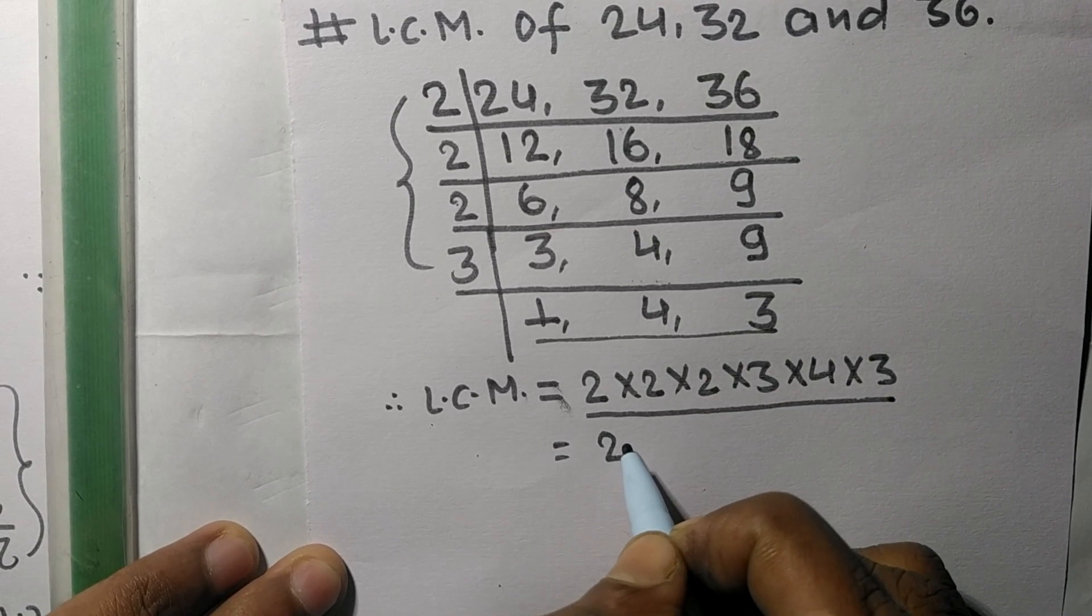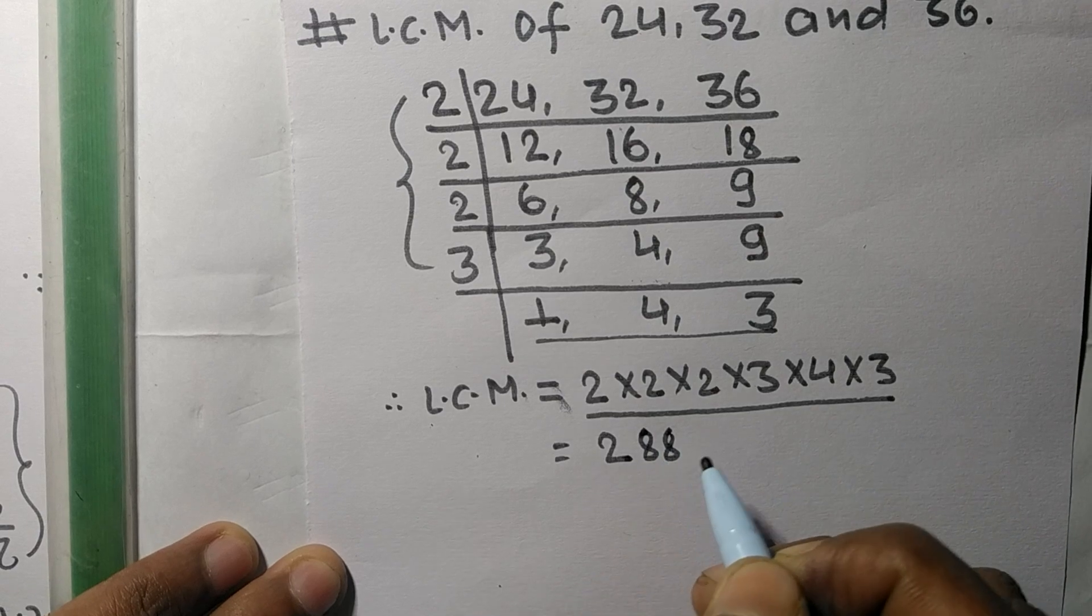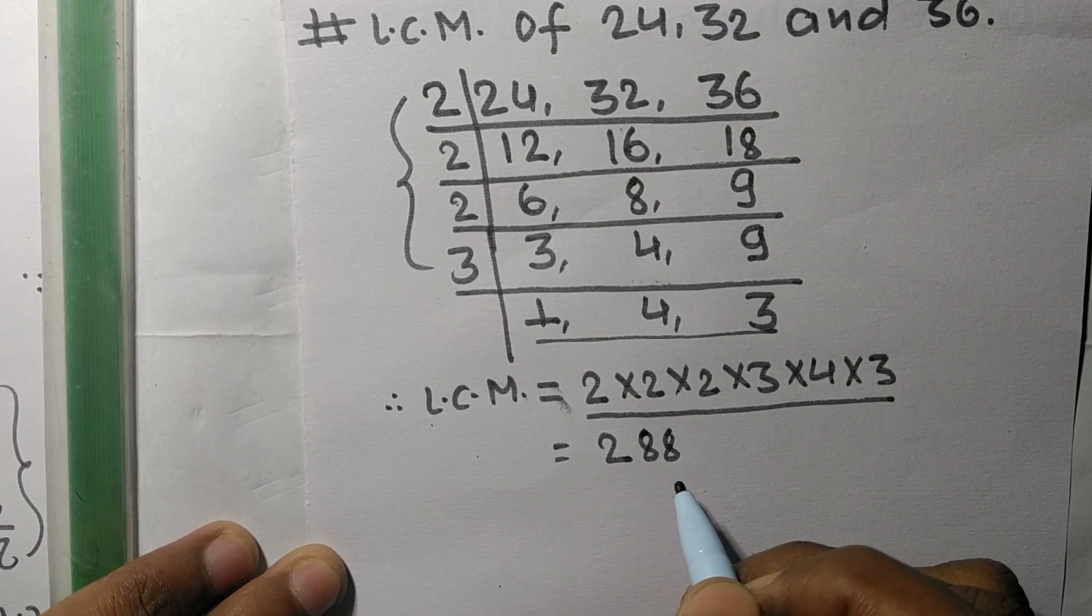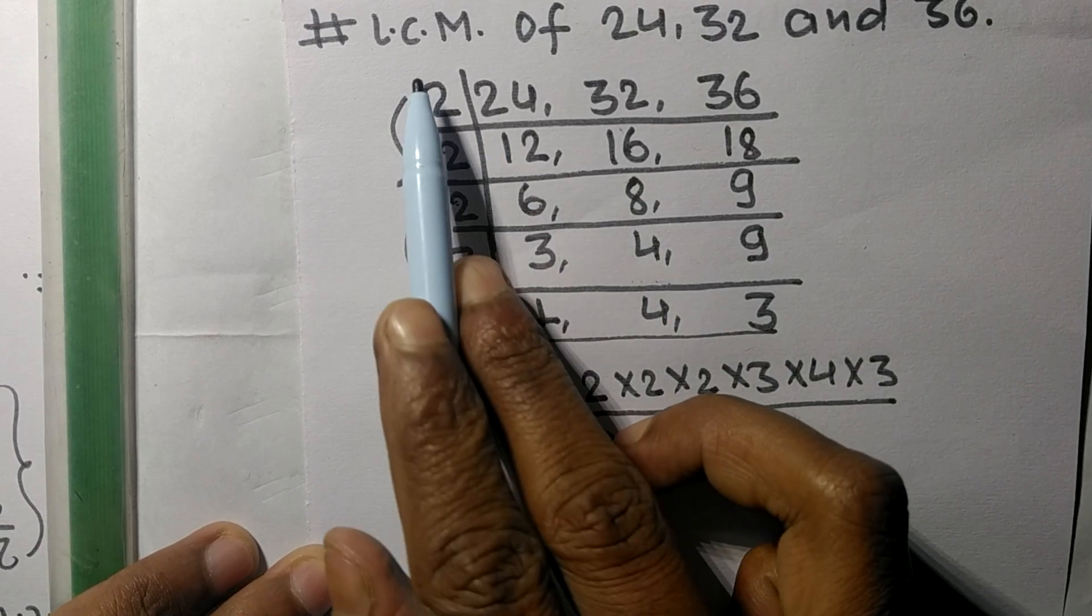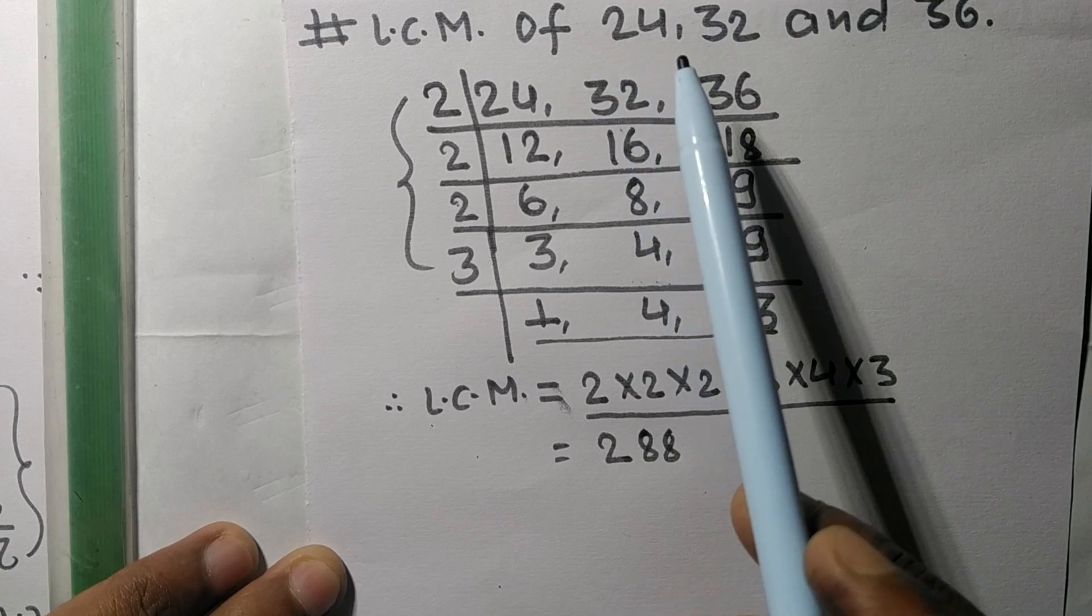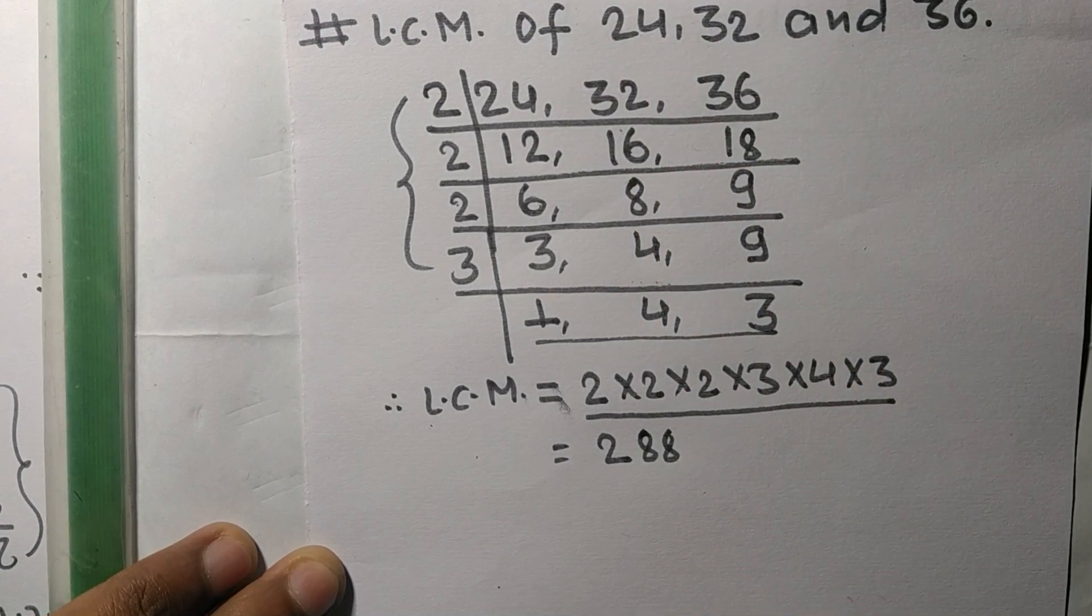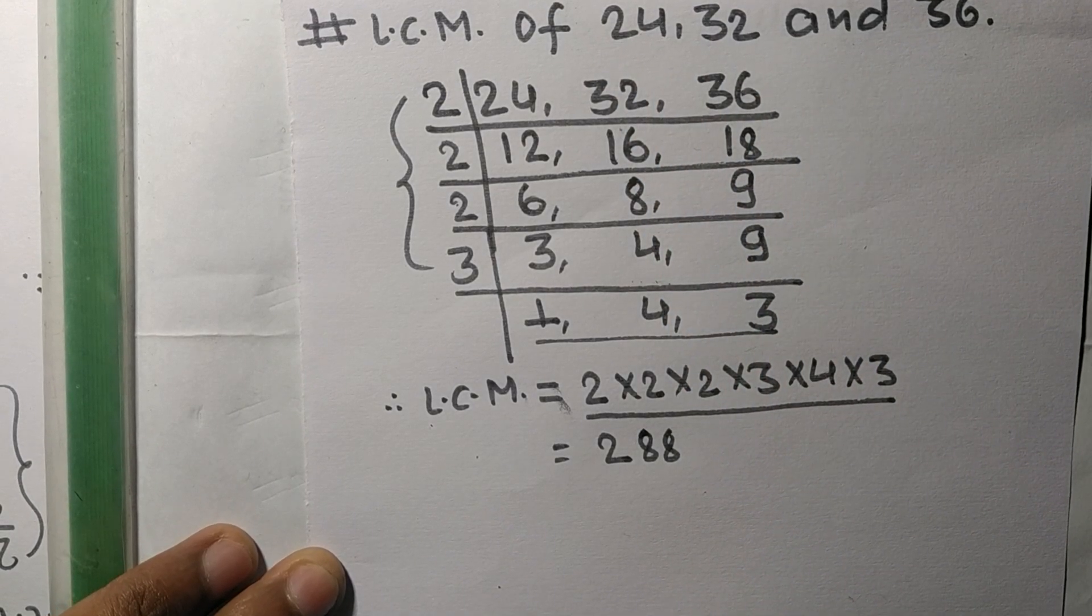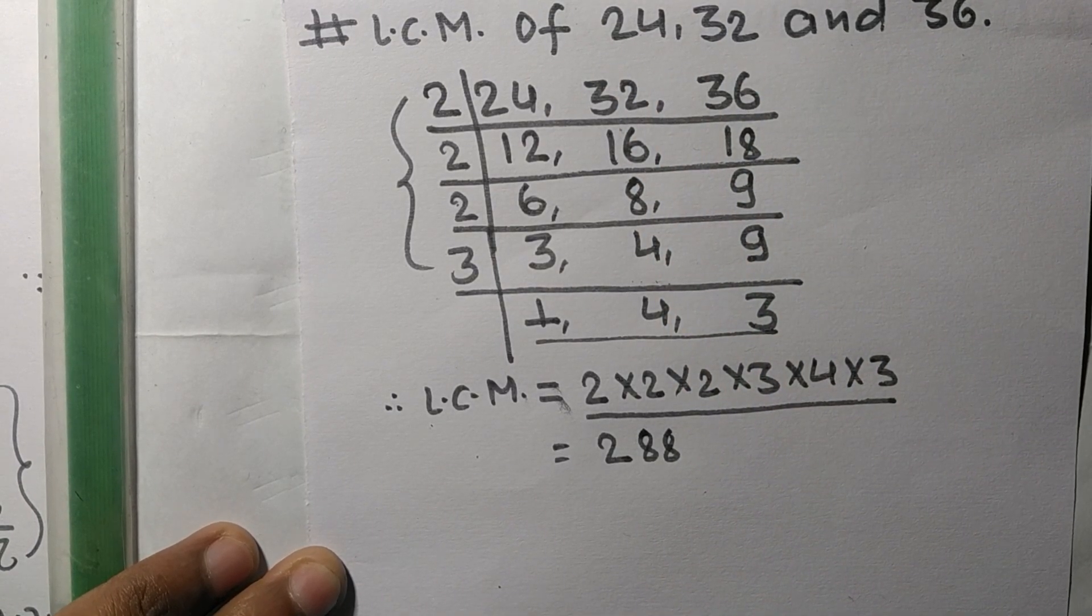So 288 is the LCM of 24, 32, and 36. So this much for today and thanks for watching.